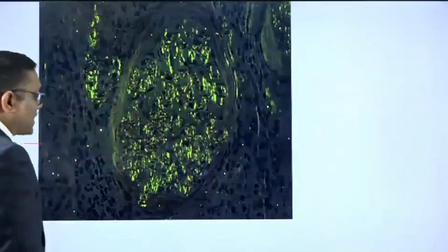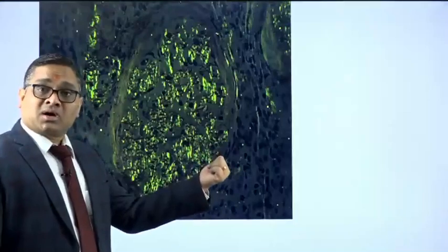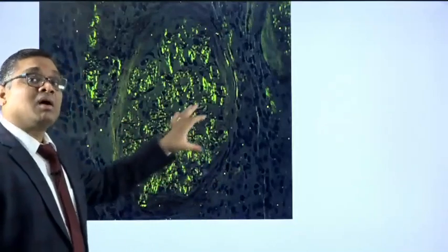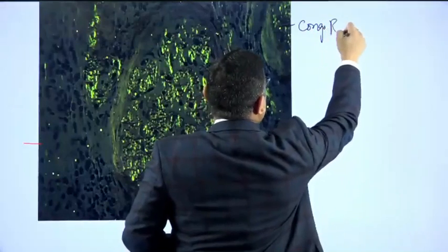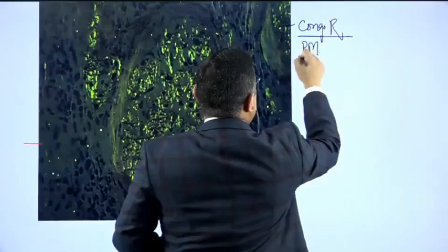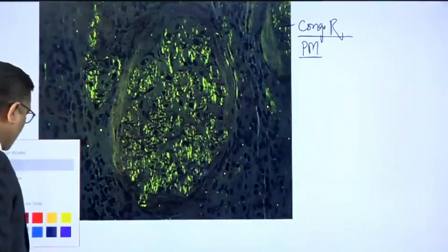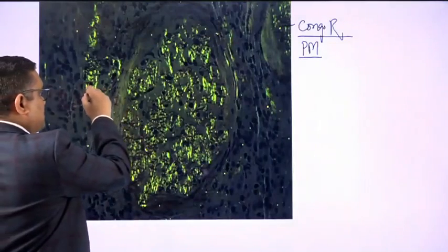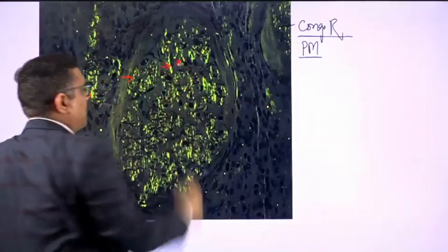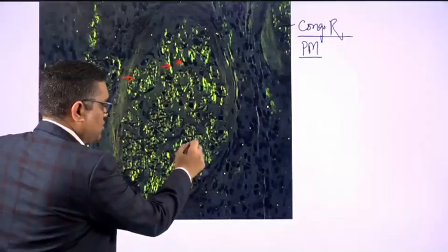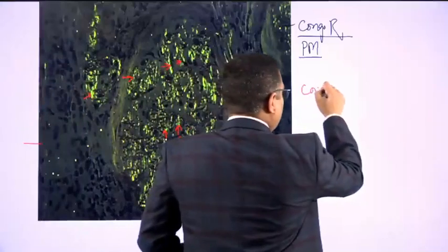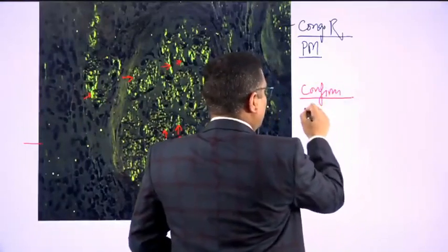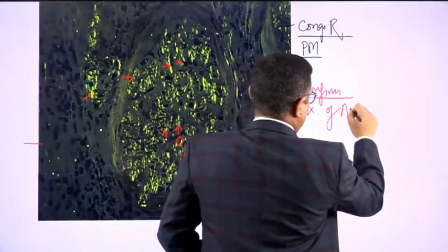Diagnosis will be confirmed when you are looking at the Congo red staining under polarized microscopy. Here I am going to show you Congo red staining under polarized microscopy. All these green structures which we are seeing — these are the apple green birefringences. Whenever you find apple green birefringences like this, this will confirm the diagnosis of amyloidosis.